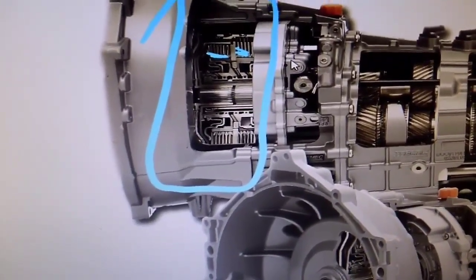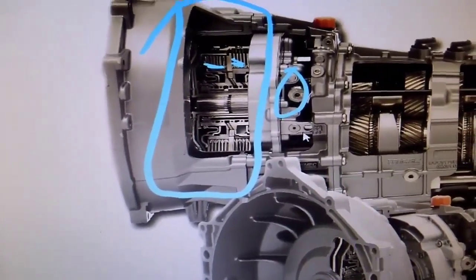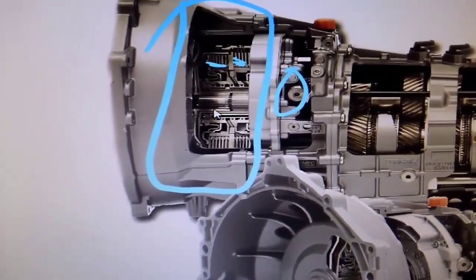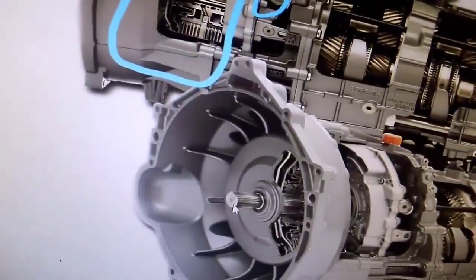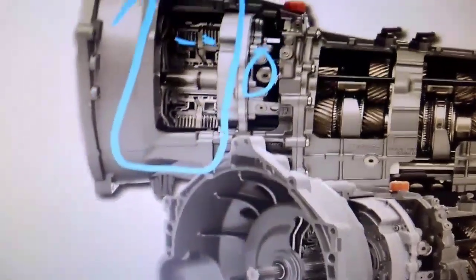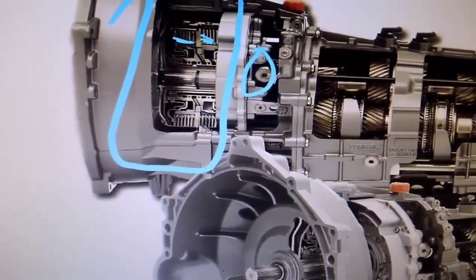Now, right in this area here, that looks to be a fluid control solenoid of some type. But what I wanted to show you is that if you look, input shaft, very large, two clutches. Okay? So, the input shaft drives both clutches.